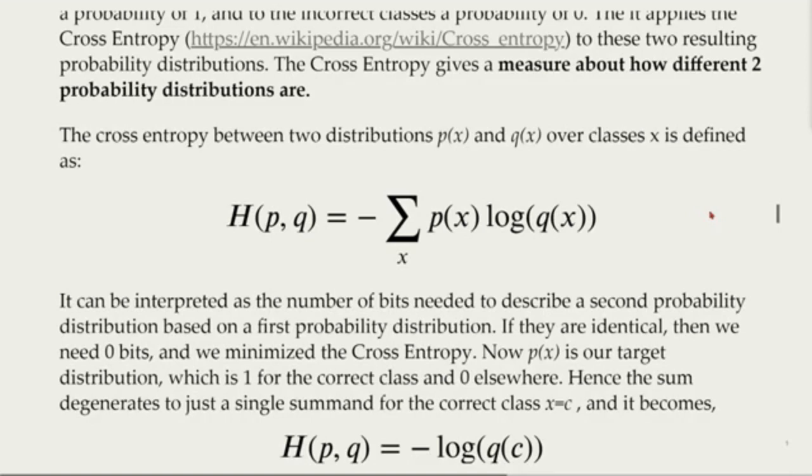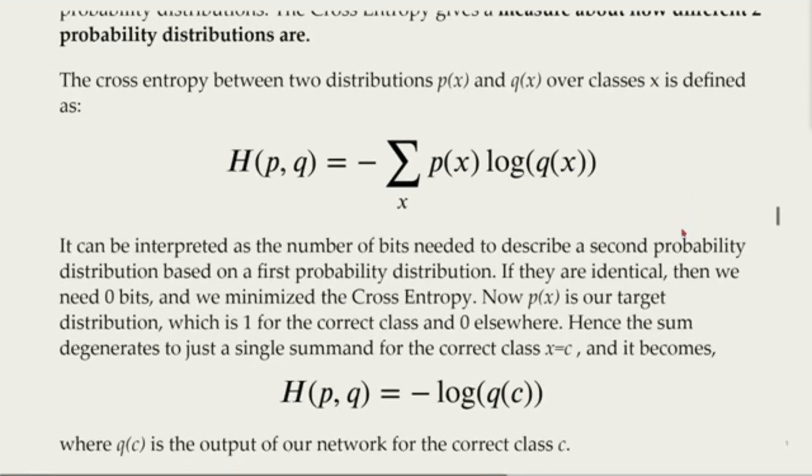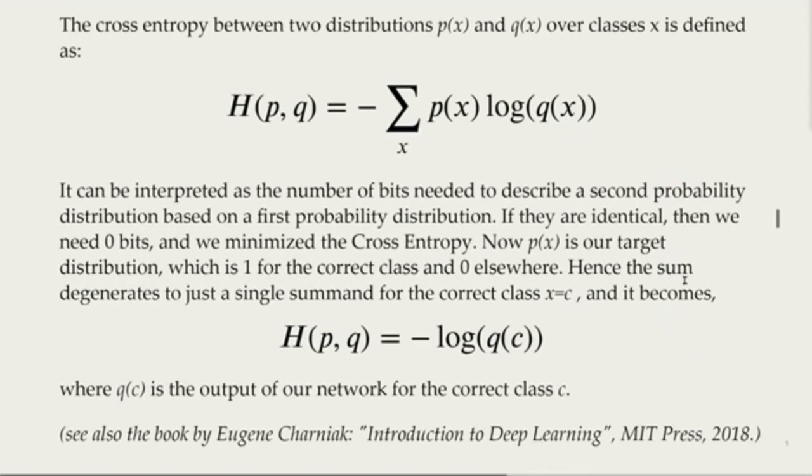If they are identical, then we need zero bits, and we minimize the cross-entropy. Now p(x) is our target distribution, which is one for the correct class and zero elsewhere. Hence the sum degenerates to just a single summand for the correct class x equals c, and it becomes minus log of q(c), where q(c) is the output of our network for the correct class c.